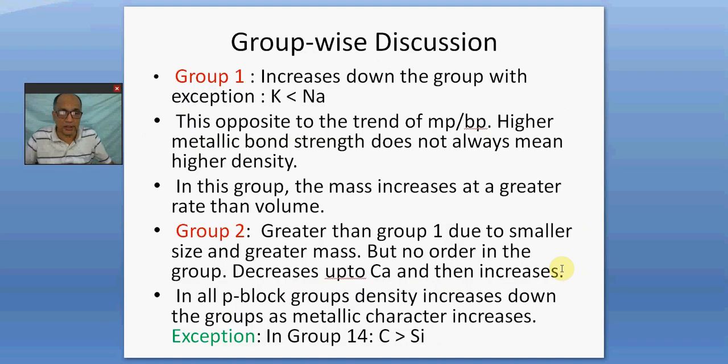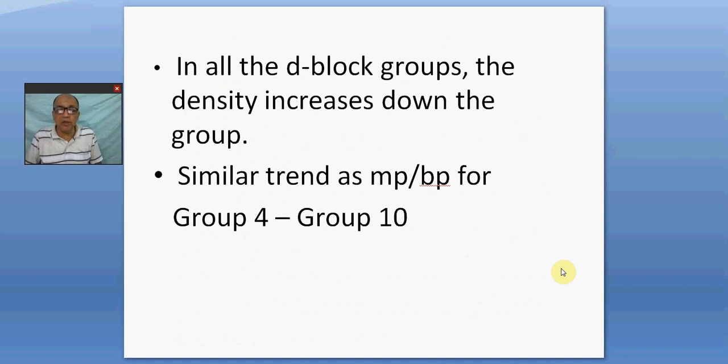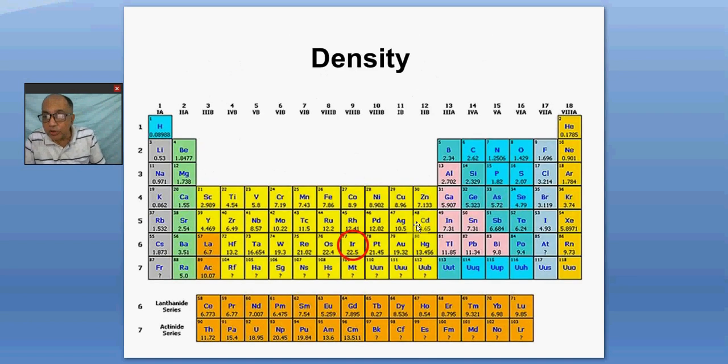Now, in the p-block, the variation in each group is very disciplined. It goes on increasing down the group. Now, in all the d-blocks, the density increases down the group, excepting carbon and silicon I have told you in group 14. Similar trend as melting point and boiling point. I am sorry, this is d-block. P-block is over. In d-block, I am telling you for the first time, the density is still more disciplined and there is no anomaly like carbon-silicon in the p-block. The density goes on increasing down the group in all groups, including the scandium group, where the melting point was decreasing, and group 11 and 12, where the melting point and boiling point trend was very typical, as you remember. But in density, it goes on increasing down. I'll show you the transition groups.